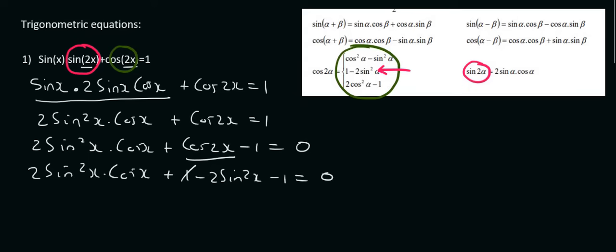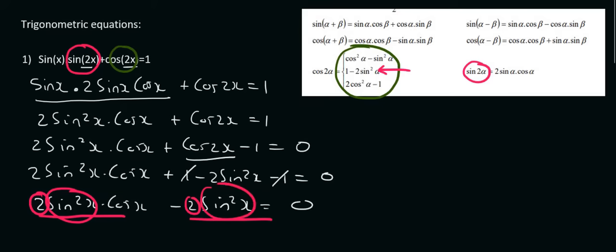These ones cancel out. We have 2 terms with a common factor. You can take out a 2 from each, and also sin²(x). So we're going to take out 2sin²(x), and we'll be left with cos(x) in the first term. There won't be anything left in the second term, so we'll just say minus 1.